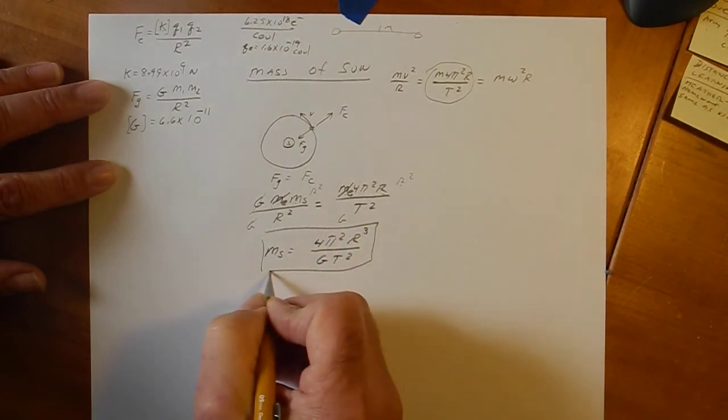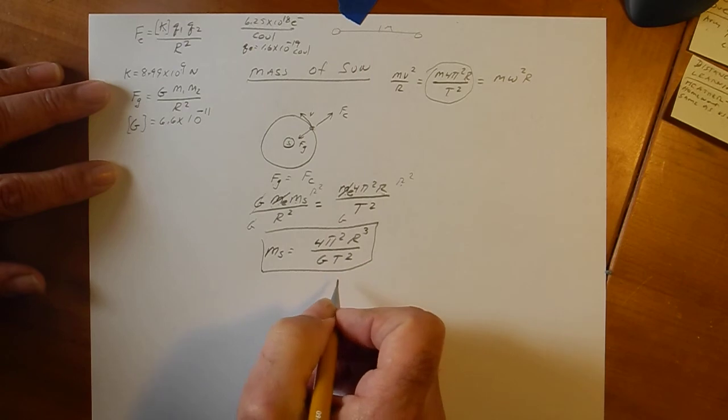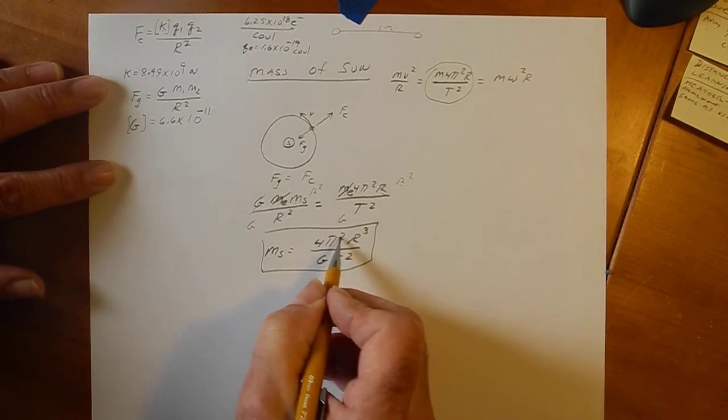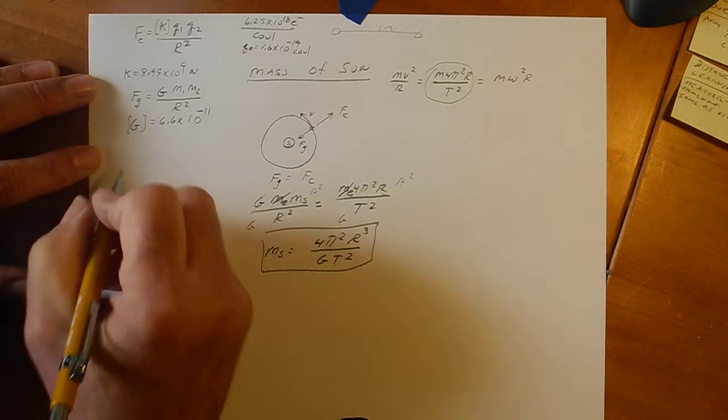Now, that's not just the mass of the sun. That's the mass of anything orbiting anything if you know how far away it is and if you know how long it takes to make a lap.